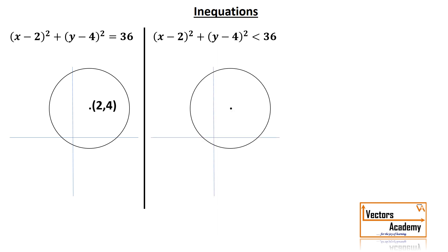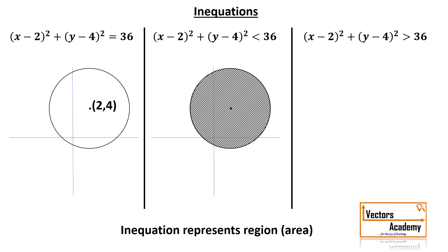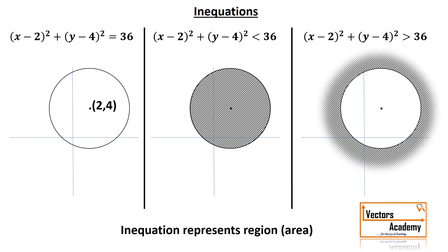What exactly is an inequation? If an equation represents a shape, an inequation represents a region or area. The region represented by this inequation: if the sign is less than or less than equal to, then the inequation represents the area which lies inside the circle. Similarly, if we have (x-2)² + (y-4)² > 36, then the inequation represents the area which lies outside the circle.